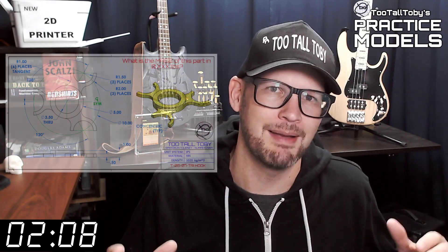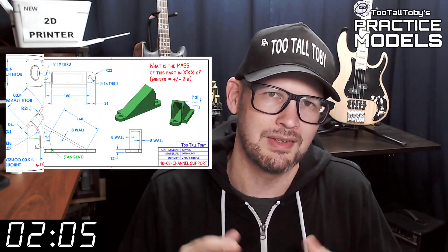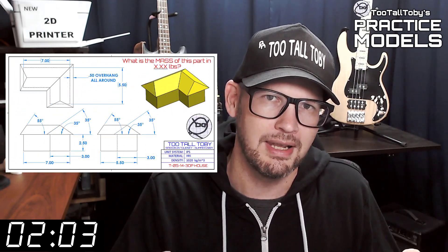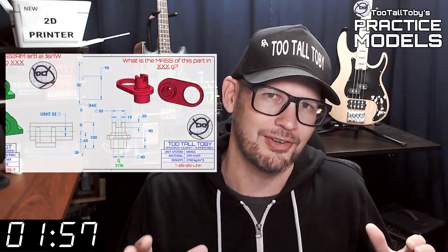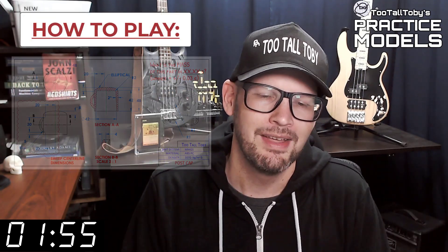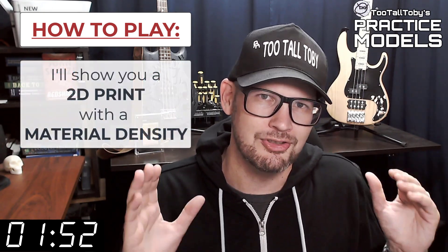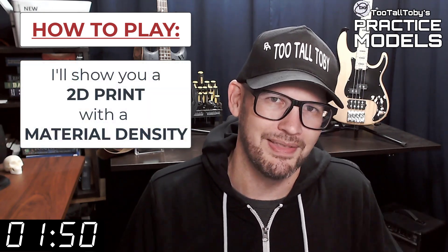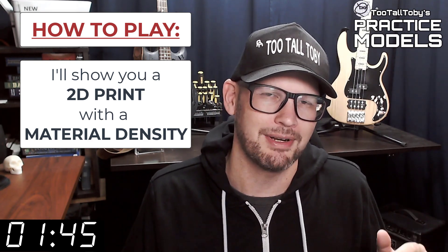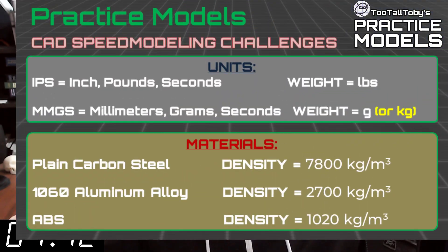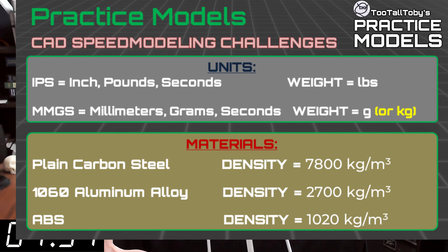If you're here for the first time, welcome. The goal of this video series is to provide you with good quality 2D prints that have all the dimensions and information you need to create a 3D model. On that print you're going to see a material property and a material density — it's going to be one of these three material properties. So take a moment, grab a screen capture of what's on the screen right now, and be sure that your materials in your library match these properties.